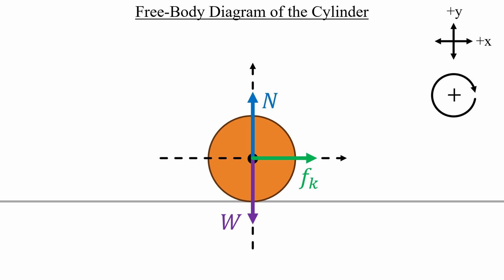The kinetic friction points to the right for two reasons. One reason is that we need a force responsible for the center of mass acceleration to the right. The other reason is that we need a force responsible for the torque causing a negative angular acceleration. If we point the friction to the right, then we satisfy both of those requirements. And that's it for the free body diagram.